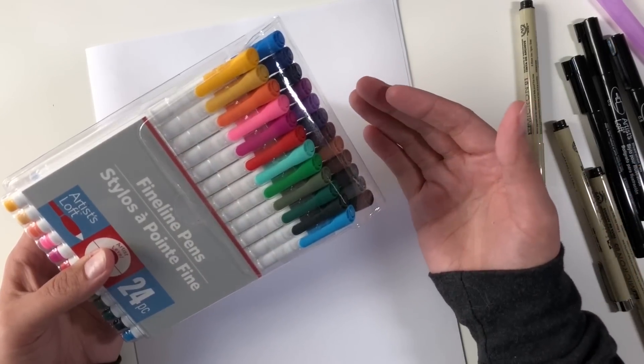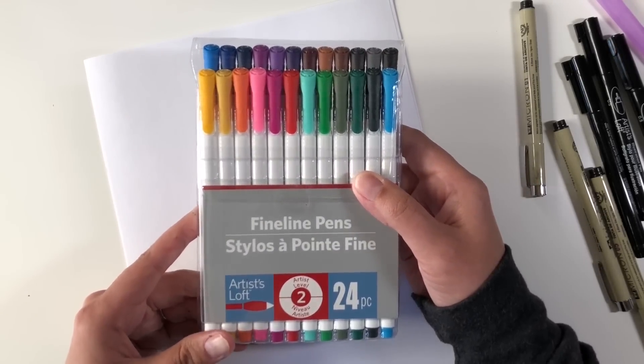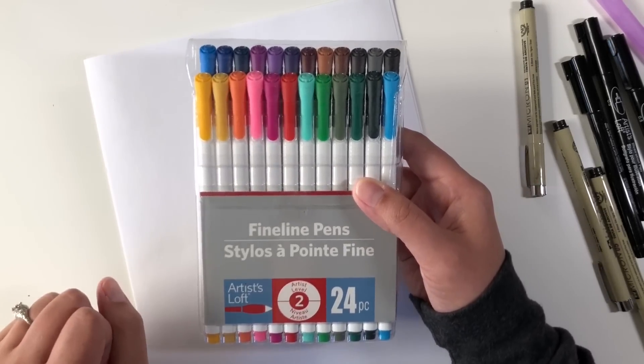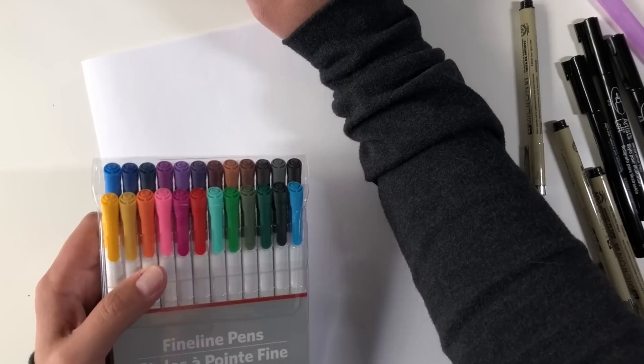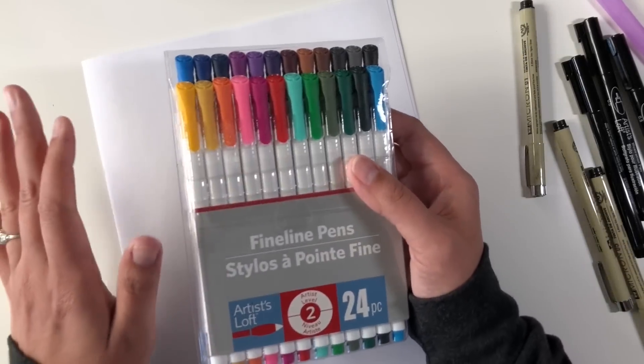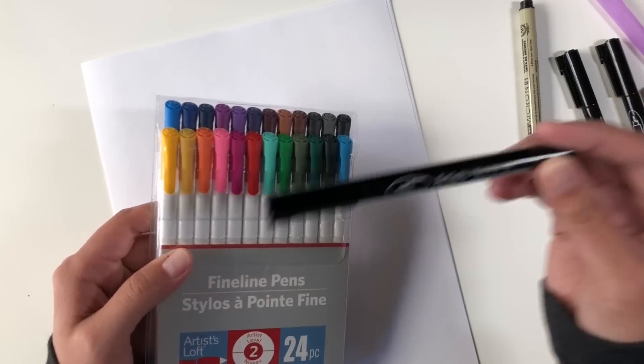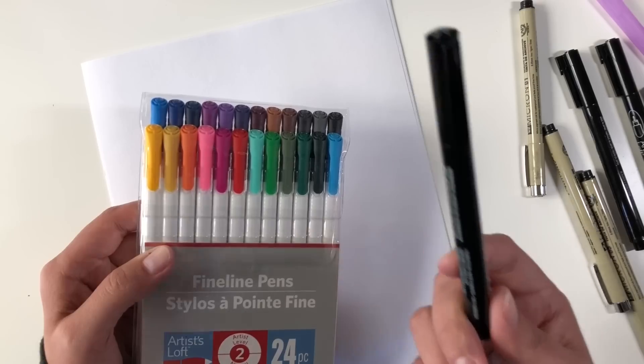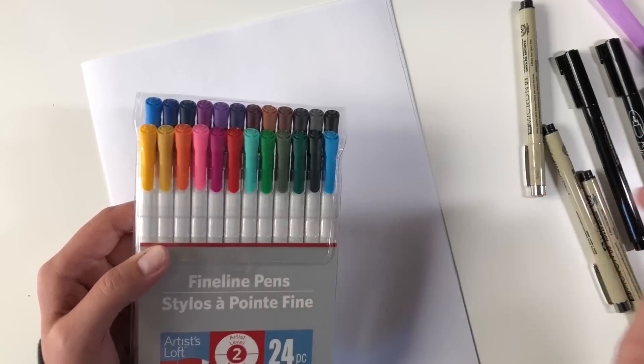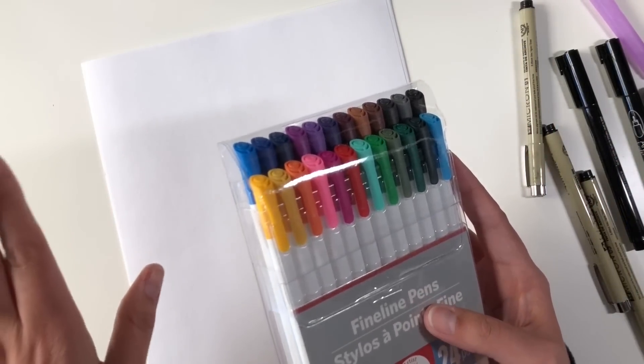I will be doing a more in-depth color comparison later in a different video. But for now, if you want to just see what these colors look like, these are $19.99 for the set. Although they are not part of the everyday value as far as I know. You can use a coupon on these. So you can get them for cheaper than $19.99. The other thing I will add is that when you look at these in terms of their grading, these fineliners here are level one academic. And these guys are number two artist level.